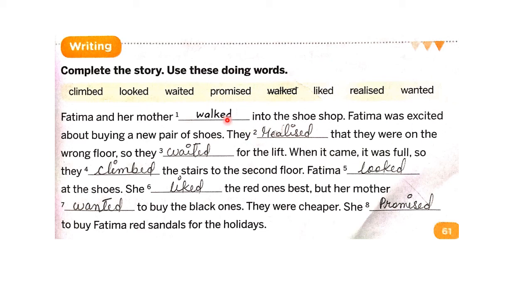Now we will see the writing exercise: complete the story using the given doing words. Fatima and her mother walked into the shoe shop. Fatima was excited about buying a new pair of shoes. They realized they were on the wrong floor, so they waited for the lift. When it came, it was full, so they climbed the stairs to the second floor. Fatima looked at the shoes and liked the red ones best, but her mother wanted to buy the black ones as they were cheaper. Her mother promised to buy Fatima red sandals for the holidays. Today we will stop here and meet in the next video.